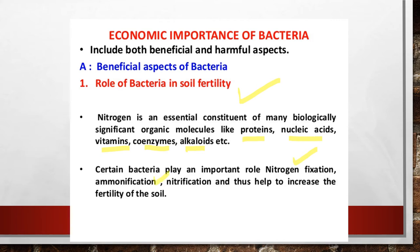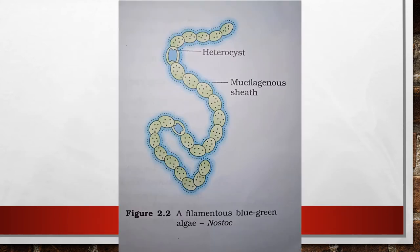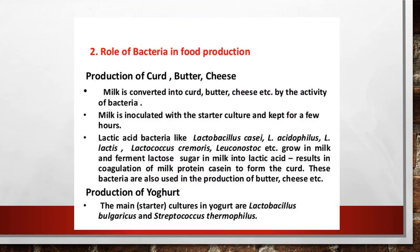Here you can see a diagram showing the filamentous structure of blue-green algae — example: Nostoc. The fixation of atmospheric nitrogen is carried out by this bacteria called blue-green algae, example Nostoc, by means of a specialized cell called the heterocyst. The heterocyst is the part where nitrogen fixation takes place in bacteria such as blue-green algae.